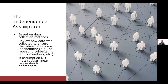The independence assumption is based on your data collection methods, so you have to review how the data was collected to ensure observations are independent — no repeating subjects, no family members, and things like that. There are models that can account for this if you have repeating subjects over time, but those are out of scope for this course. If this assumption is not met, you cannot use regular linear regression.